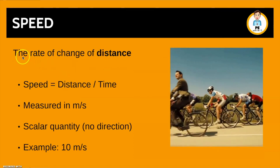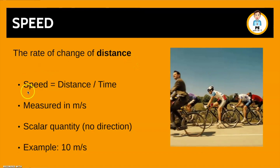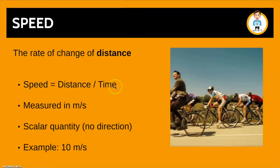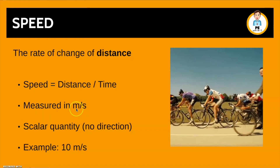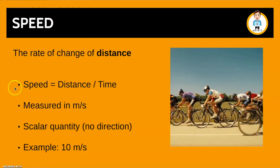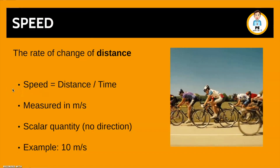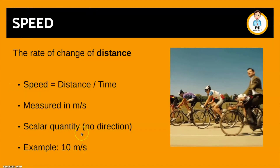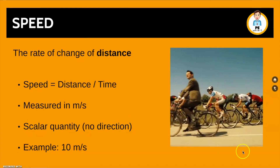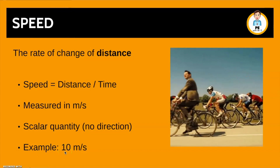Moving on to speed, which is the rate of change of distance. The equation is: speed equals distance divided by time. In biomechanics and physics it's measured in metres per second, whereas in everyday life we're more familiar with kilometres per hour or miles per hour. It is a scalar quantity — similar to distance — which means it has no direction. For example, Mr. Bean here might be riding at 10 metres per second.